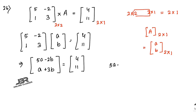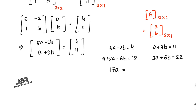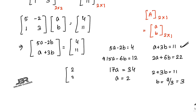Comparing both sides: 5a minus 2b equals 4 and a plus 3b equals 11. Multiply the first by 3 and the second by 2: 15a minus 6b equals 12 and 2a plus 6b equals 22. Adding gives 17a equals 34, so a equals 2. Substituting into the second equation: 2 plus 3b equals 11, so 3b equals 9, giving b equals 3. Matrix A equals [2; 3]. That is your answer.